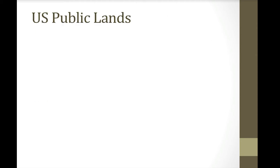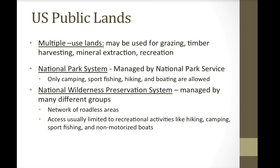In the United States, we have very similar categories of public lands. First, there are multiple use lands that may be used for grazing, timber harvesting, mineral extraction, and recreation. These include national forests and national rangelands, where people are able to do multiple things on a single piece of land.